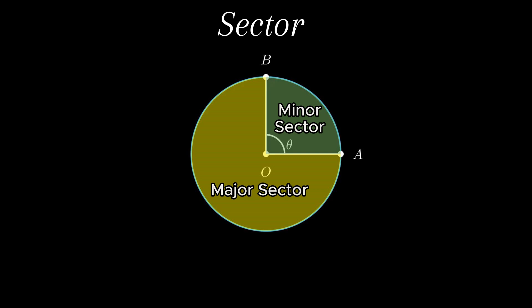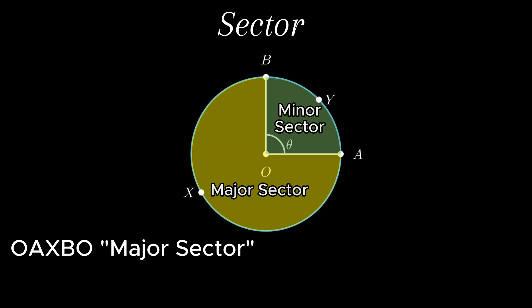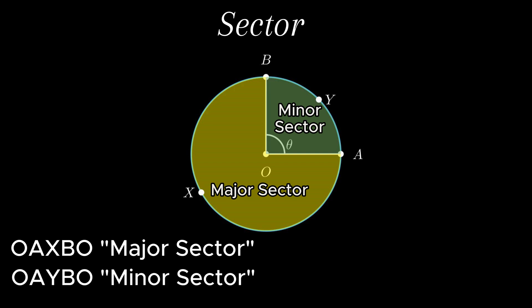Mathematically, to distinguish them, a point is considered on both the minor and major sectors. For example, consider a point X on the major sector and point Y on the minor sector. The major sector is then denoted as OAXBO whereas the minor sector is denoted as OAYBO.